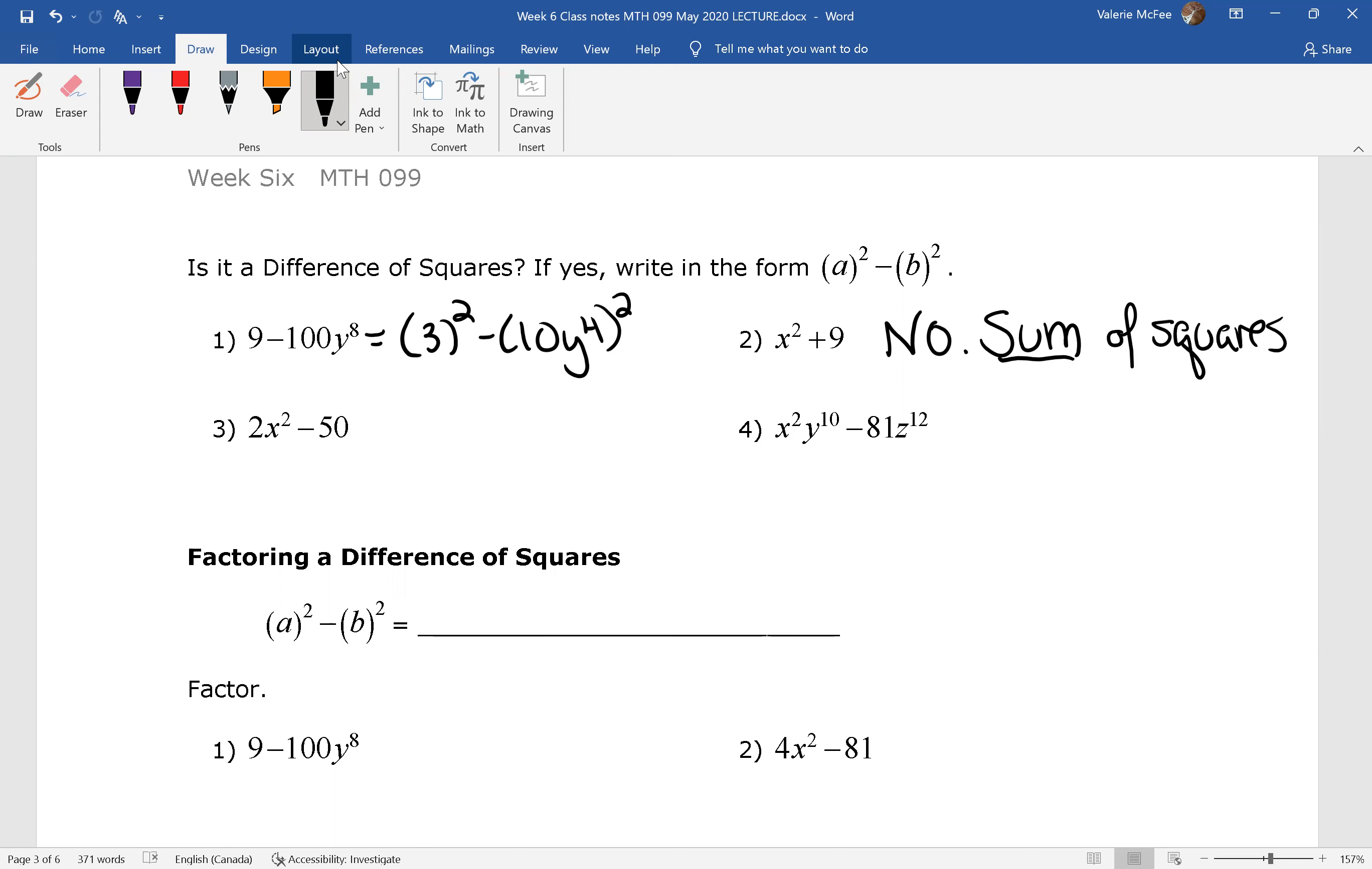What about question 3? Did you notice there's a greatest common factor? Yes, it is a difference of squares. This can be written as 2 times x squared minus 5 squared. And question 4? Yes again.